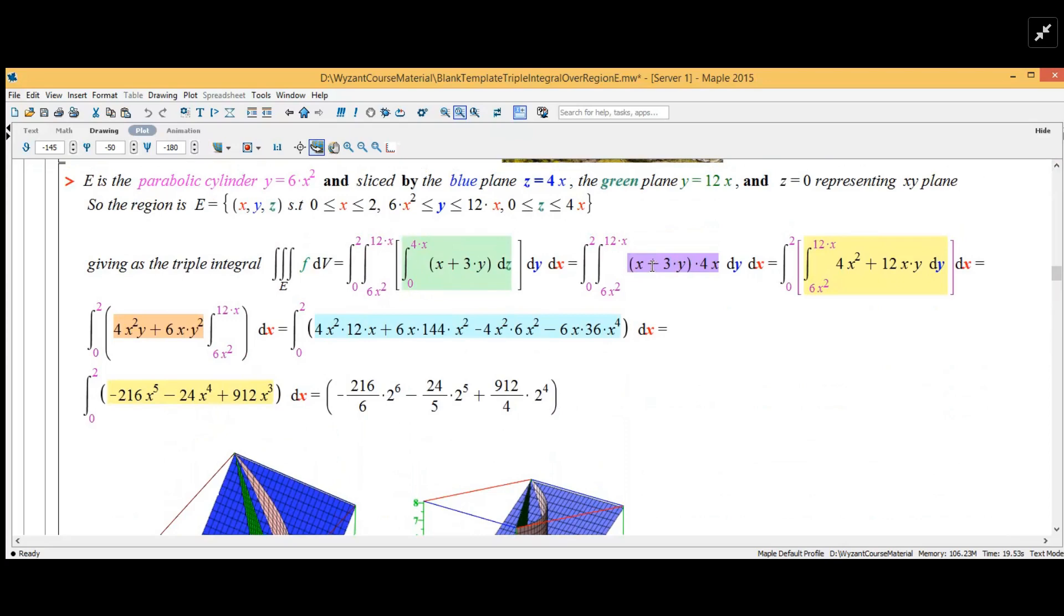We integrate this term with respect to dy. I factored out the 4x, and the limits of integration are 12x and 6x squared, which gives us 4x times 12x minus 6x cubed. We combine them and it becomes minus 216x to the fifth minus 24x to the fourth plus 912x squared.